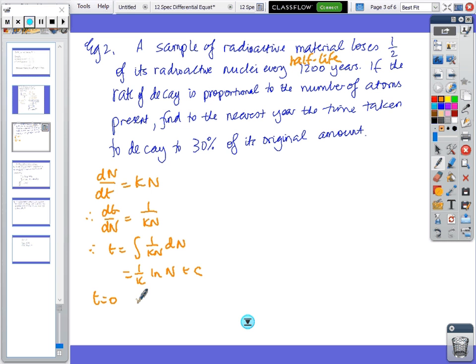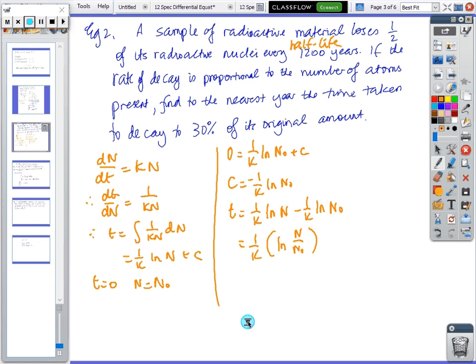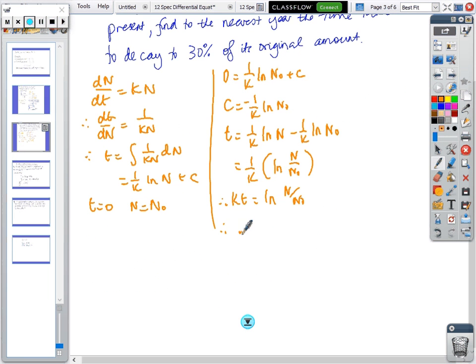When t equals 0, the population equals the original size n_0. So 0 equals (1/k) ln n_0 plus c, so c equals -(1/k) ln n_0. So t equals (1/k) ln n minus (1/k) ln n_0, which equals (1/k) ln(n/n_0). Therefore kt equals ln(n/n_0).